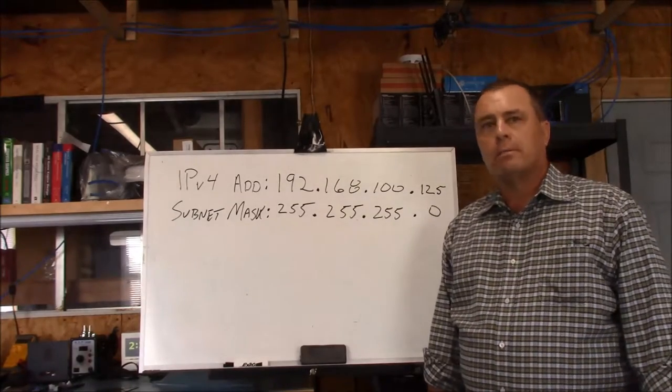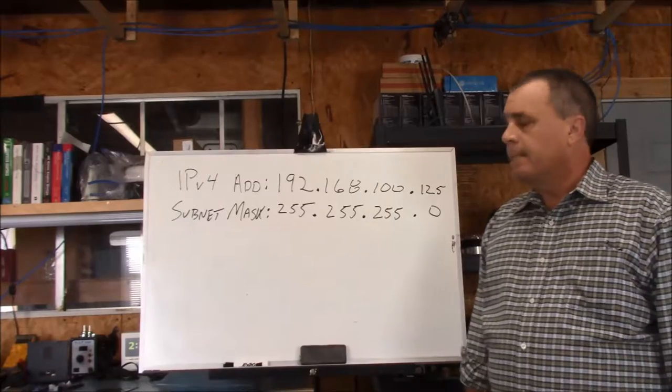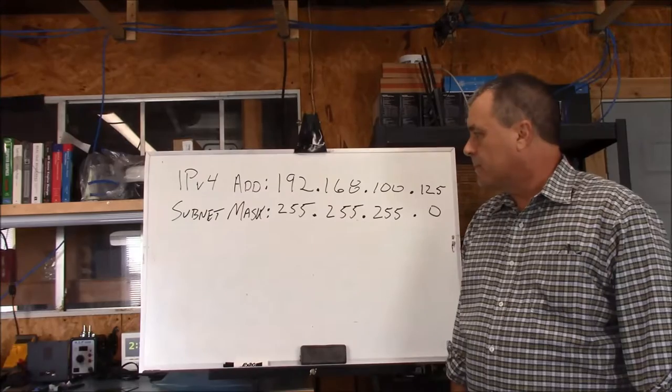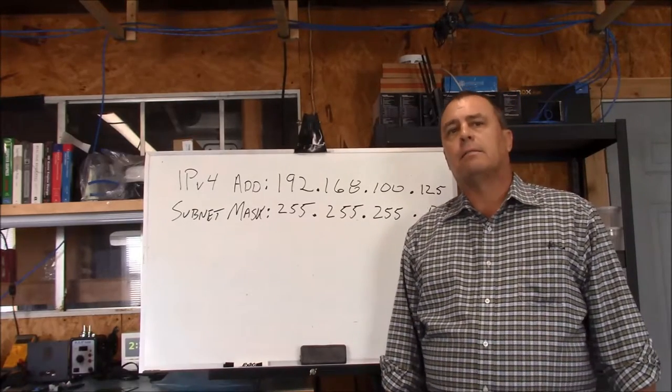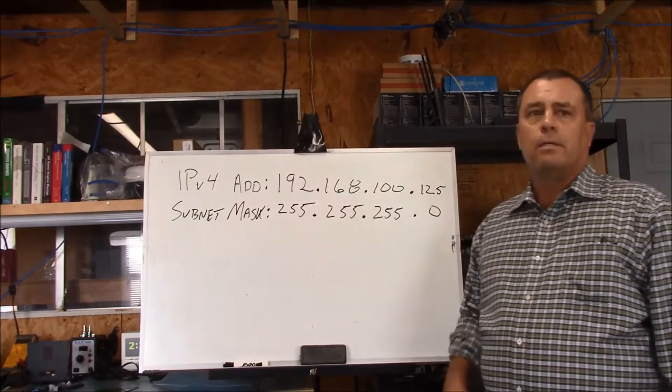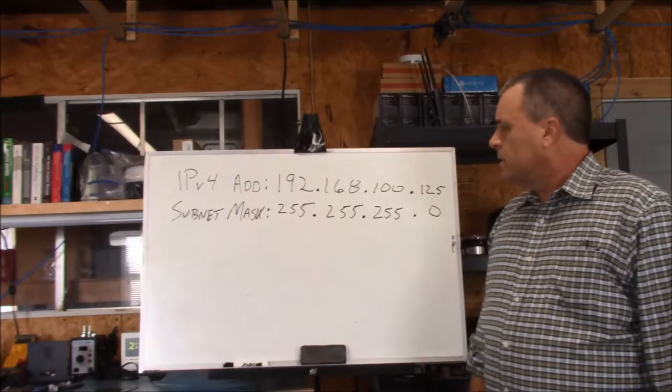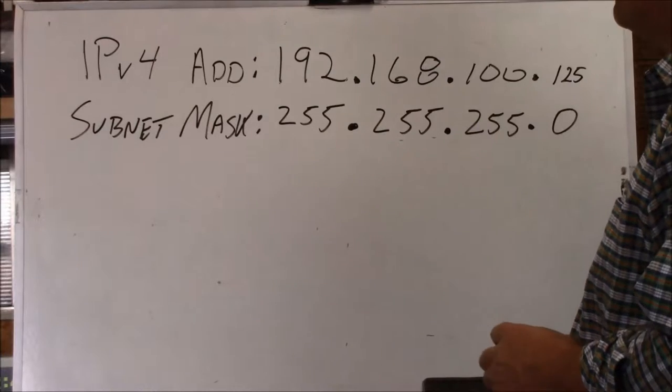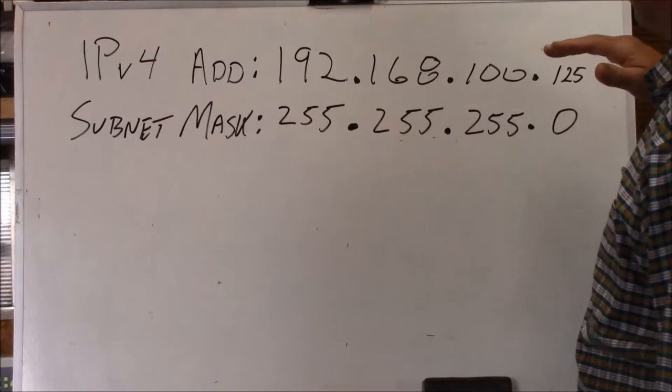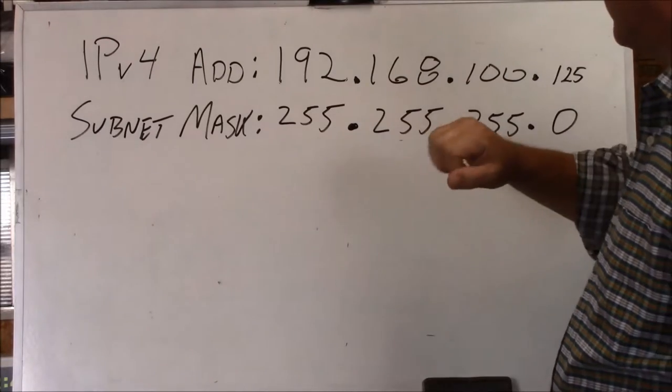IP addresses have two parts. The first part is the network ID, and the second part is the station ID, also called the host ID. To determine the network ID from the station ID is where the subnet mask comes into play. The subnet mask allows the hardware driver not only to determine the network ID from the station ID, but also the network wire address and broadcast address. We'll see more of this later in the video. The way to determine the network ID part of the IP addresses versus the station ID part of the IP address is by looking at the subnet mask.